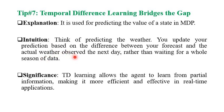You compare the forecast and the actual weather observed the next day — you compare two consecutive states with each other. In temporal difference we are using partial information. Temporal difference learning allows the agent to learn from partial information, making it suitable for real-time applications. Thank you very much — if you learned something from this video, I'd appreciate a like and subscribe.